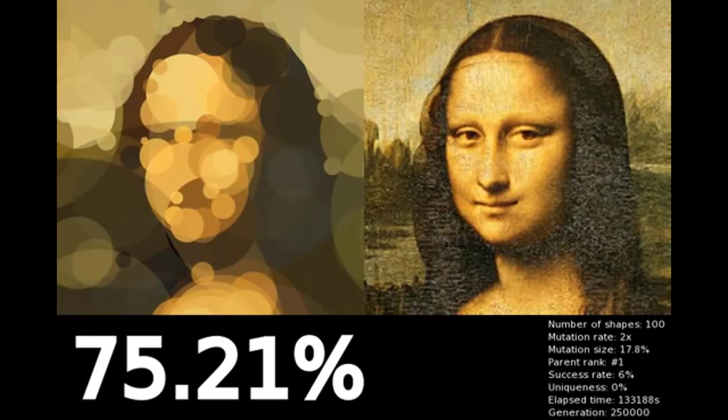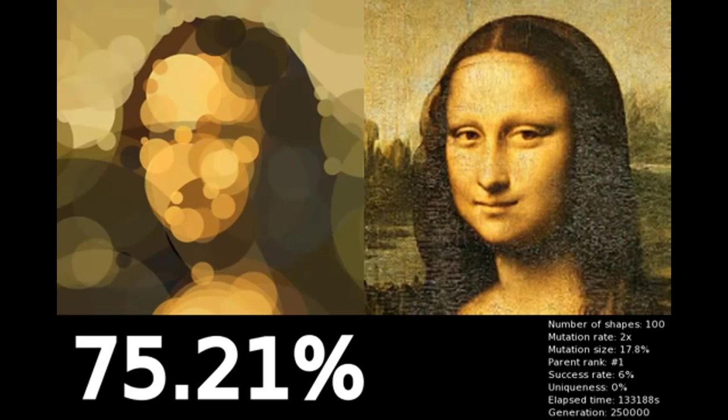We will soon discuss how they made this simulation, but first, let's change the chromosome so it includes more shapes, 250, which will probably result in even a better picture. And we are running again.